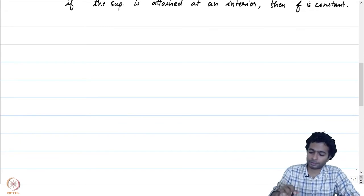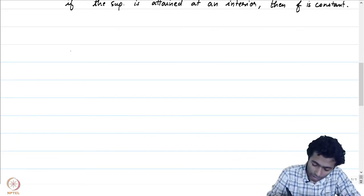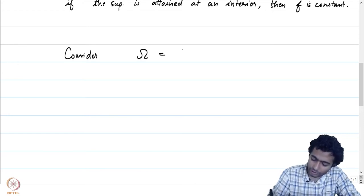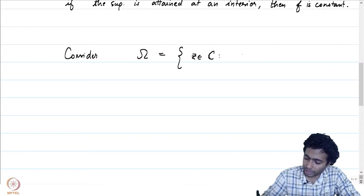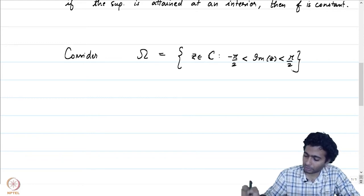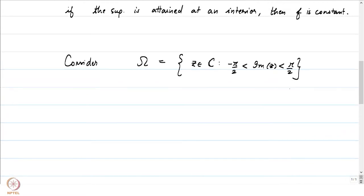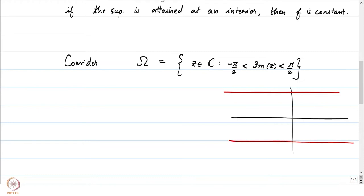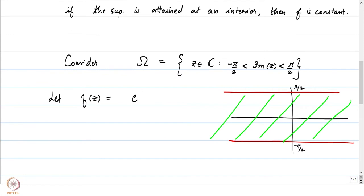Let me give an example to illustrate that this statement will not go through for unbounded domains. Consider omega to be the horizontal strip: the set of all Z in ℂ such that minus π/2 is less than the imaginary part of Z, which is less than π/2. In this region, shaded in green, the imaginary part is between minus π/2 and plus π/2. In this region, consider the function f(Z) = e^(e^Z).